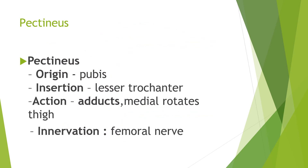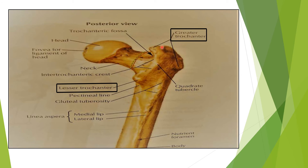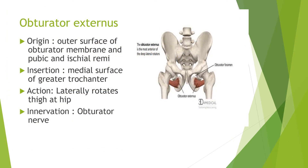The pectineus muscle originates from the pubis and is inserted on the lesser trochanter of the femur. It adducts the thigh, similar to the other muscles in the group. Its innervation is by the femoral nerve, which distinguishes it from the other medial compartment muscles.